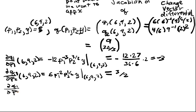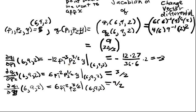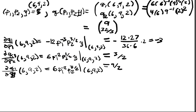DQ1/DY is the final one. 6, 9, 2 is equal to 6P1^(-2) P2^(3/2). Evaluate at 6, 9, 2 will yield 9/2. So those are all the Q1 derivatives, and now I have to do all the Q2 derivatives.